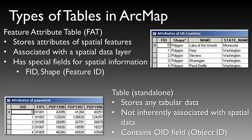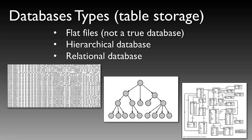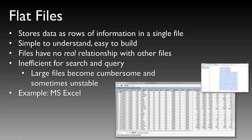When we're discussing GIS, there are a number of different database types. The tables we've been discussing are loosely defined as a type of database. Within the GIS, we often hear reference to flat files, which are not a true database, though they certainly have attributes similar to a database, a hierarchical database, or a relational database. Flat files are files that store data in rows of information in a single file. These flat files are very simple to understand, easy to build, and easy to update. However, the files have no real relationship with other files, so there's no interlinking between these files within a basic database structure. These flat files are inefficient for searches and queries because the large files become cumbersome and sometimes unstable and difficult to use.